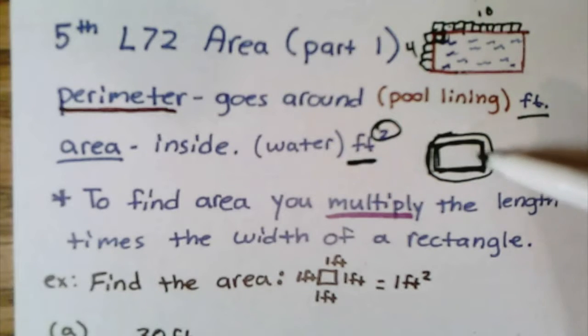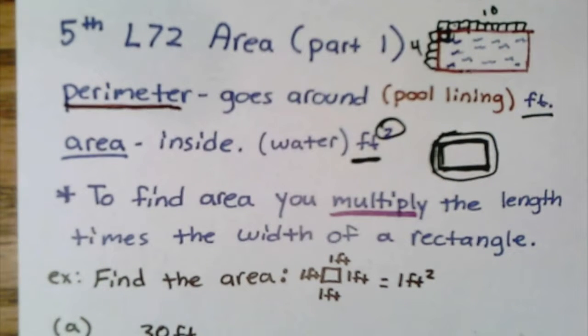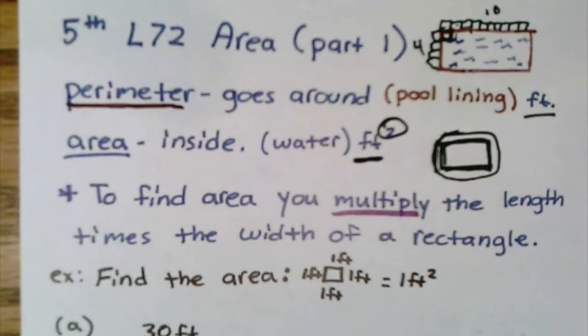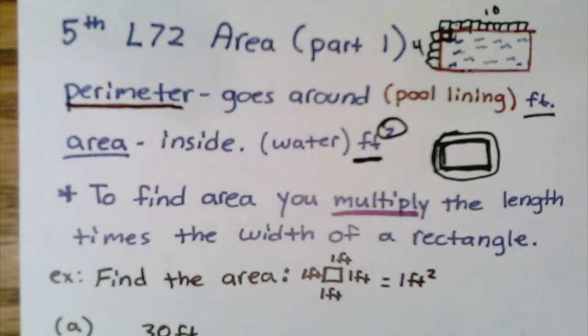In our classroom, the carpet on the floor is the area. The baseboards that go around the room would be the perimeter. If you had a garden, the fence around the garden is the perimeter; the garden itself would be the area. The area is always the inside part, and the perimeter is what goes around it.